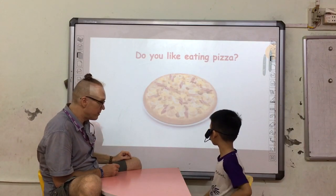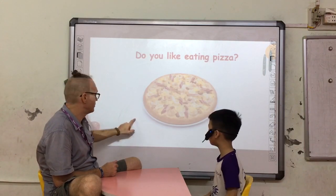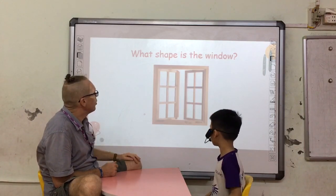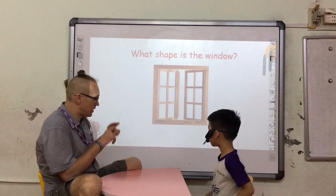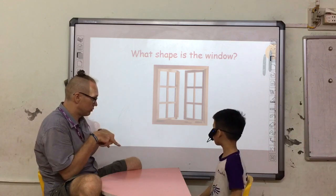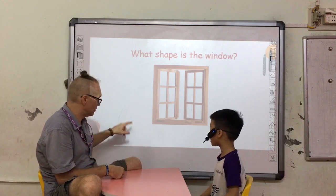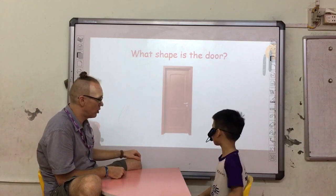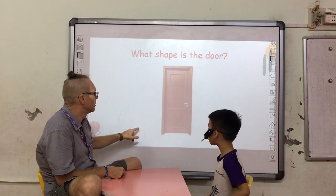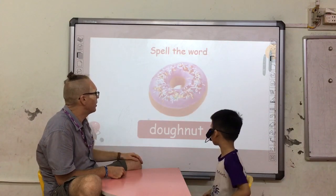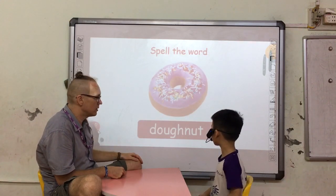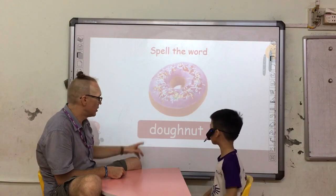Do you like eating pizza? Yes, I do. What shape is the window? It's square. Good. What shape is the door? Okay. What is this? Daughter.